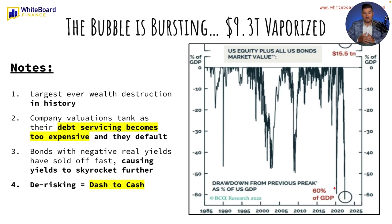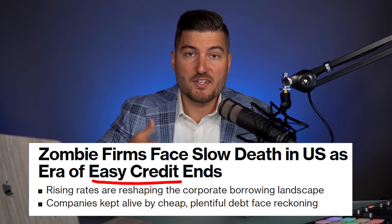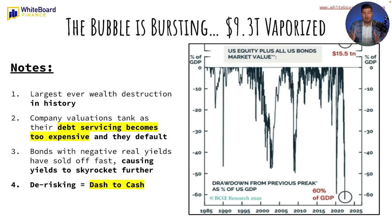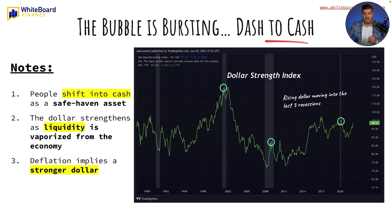Company valuations tank as their debt servicing becomes too expensive and they default. We are seeing a record high of zombie companies — companies that just exist enough to service their debt, making the minimum payments. Bonds with negative real yields have sold off fast. I've been talking about bonds and them not being a great investment for years on this channel. This is causing their yields to skyrocket further. This de-risking is creating a dash to cash. What this chart is showing you is the dollar strength index. We're seeing a rising dollar moving into the last three recessions — those gray bars represent when recessions happened.